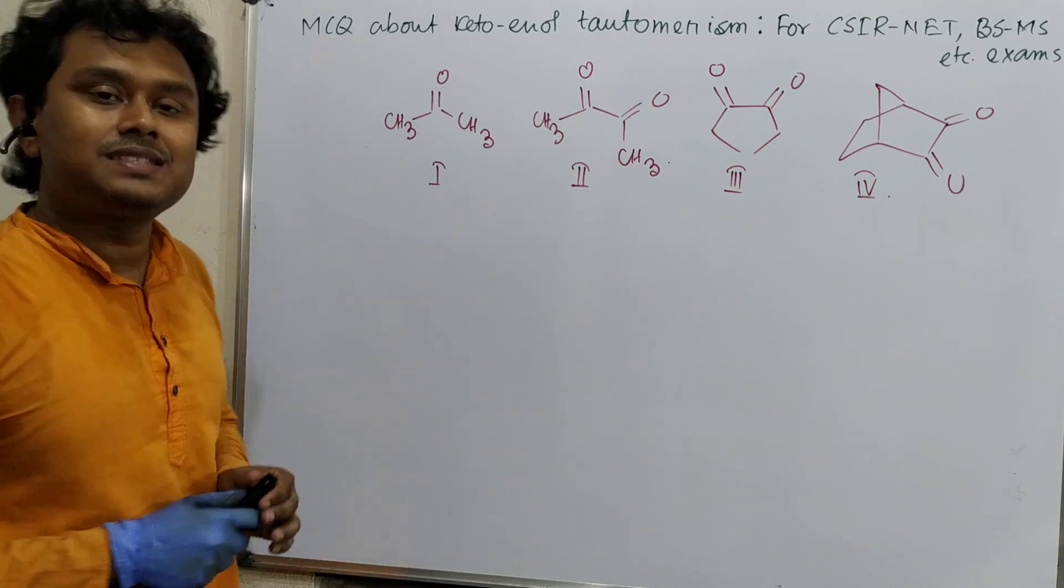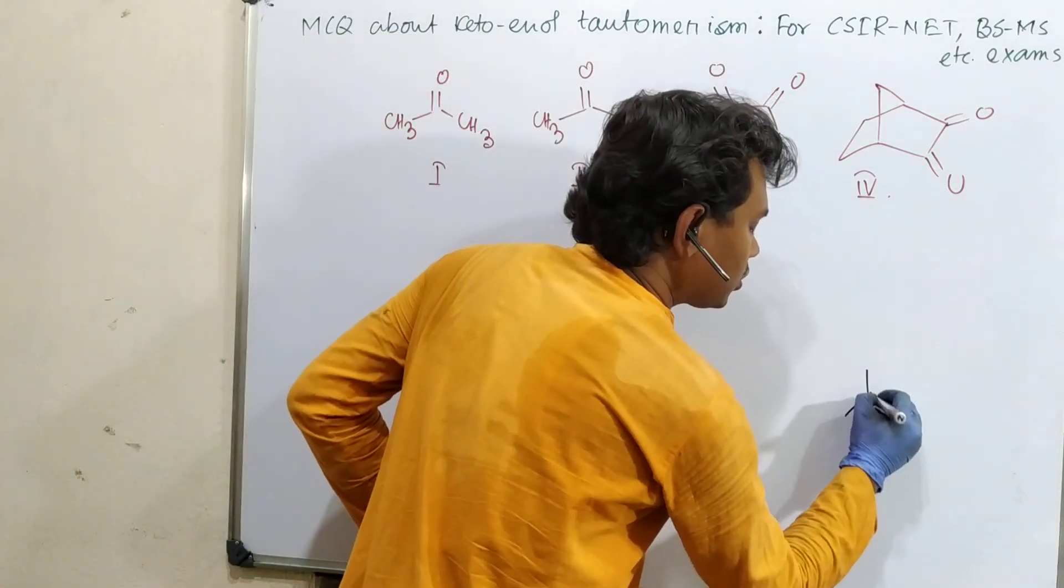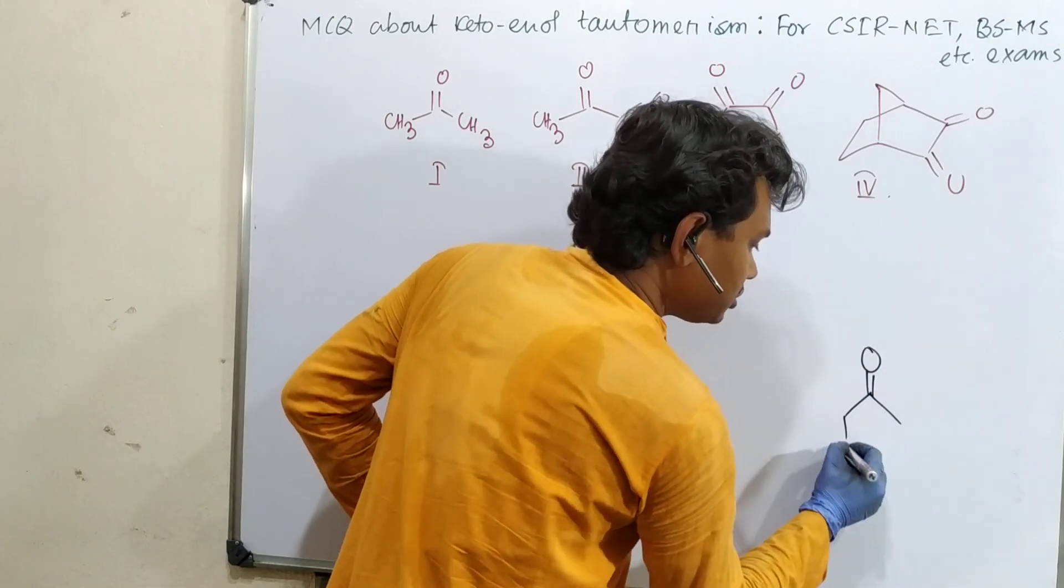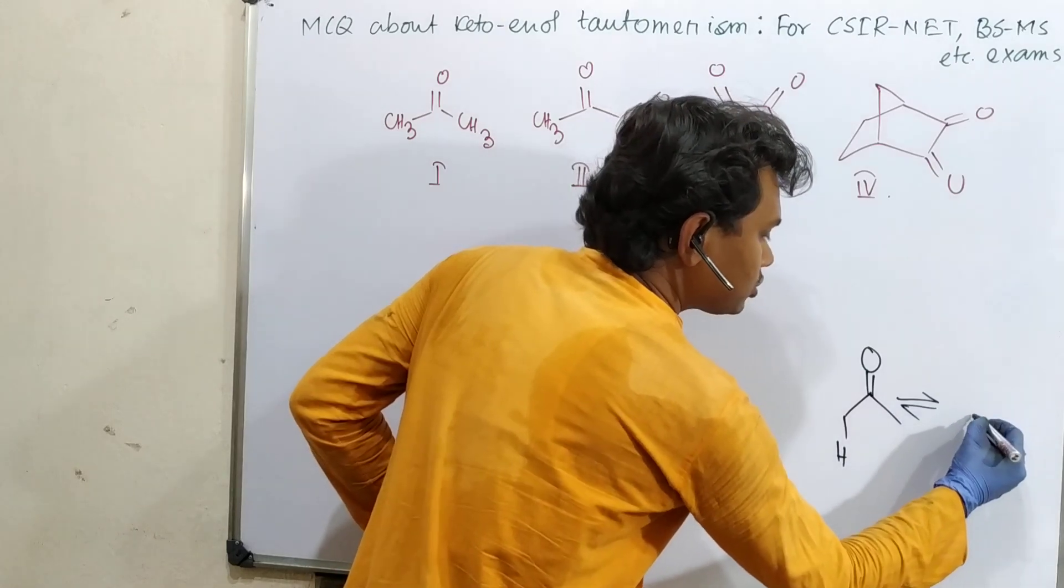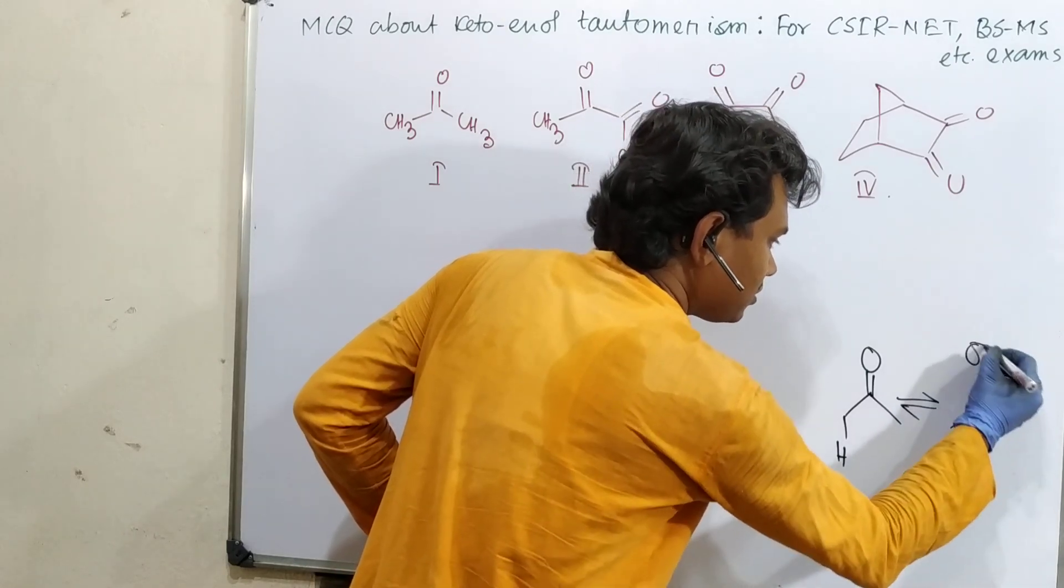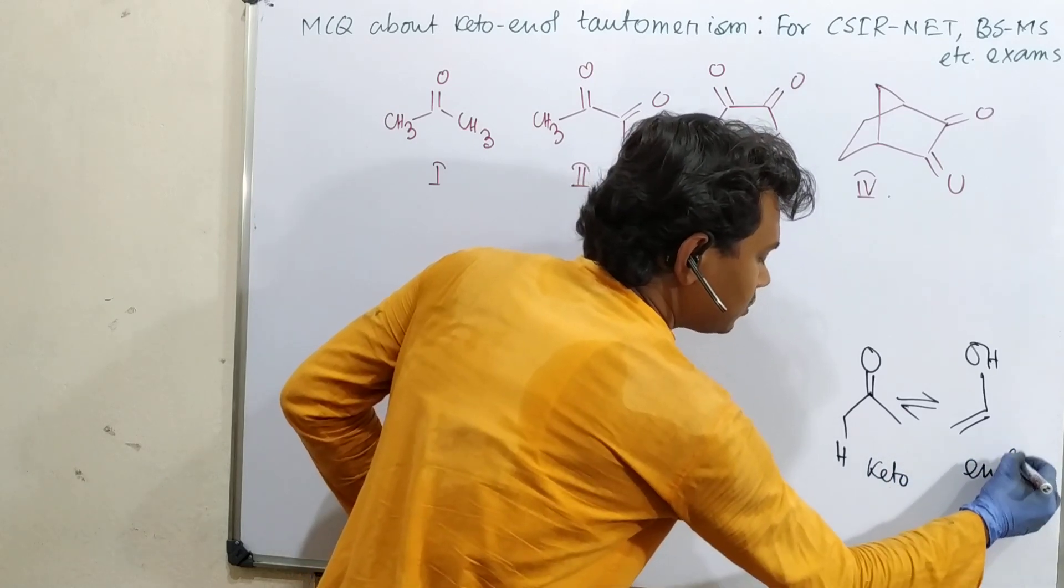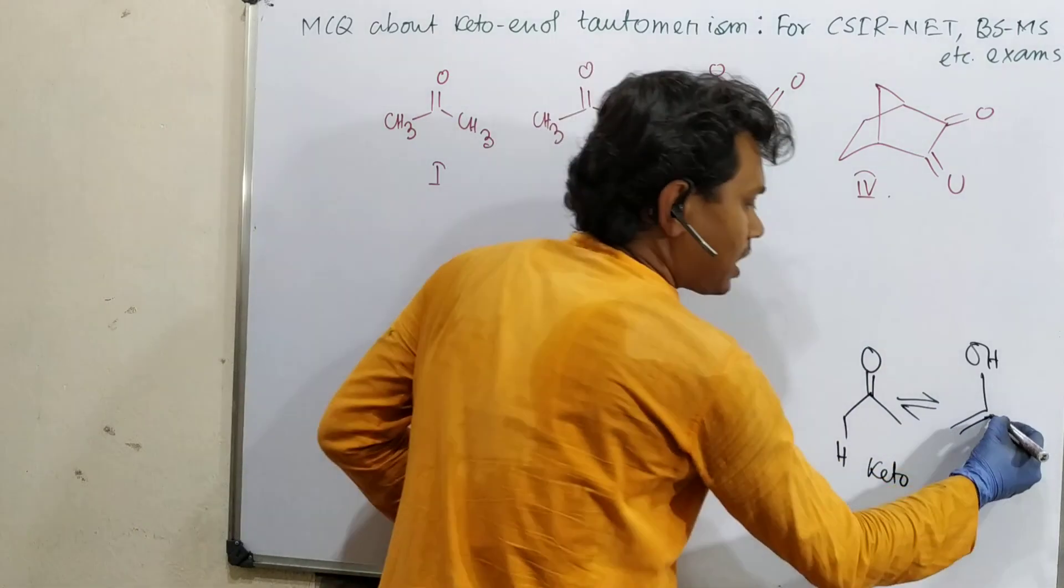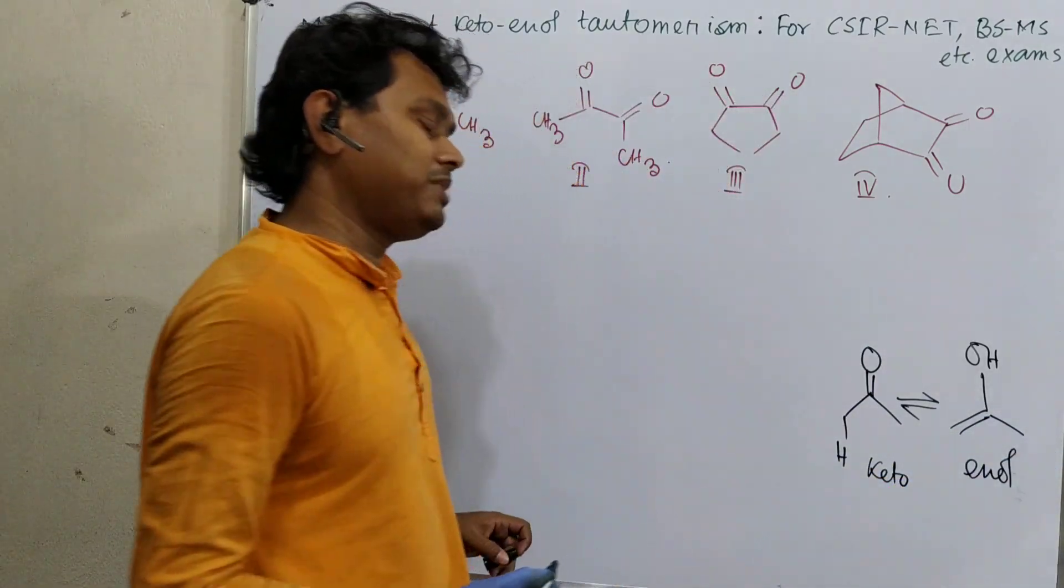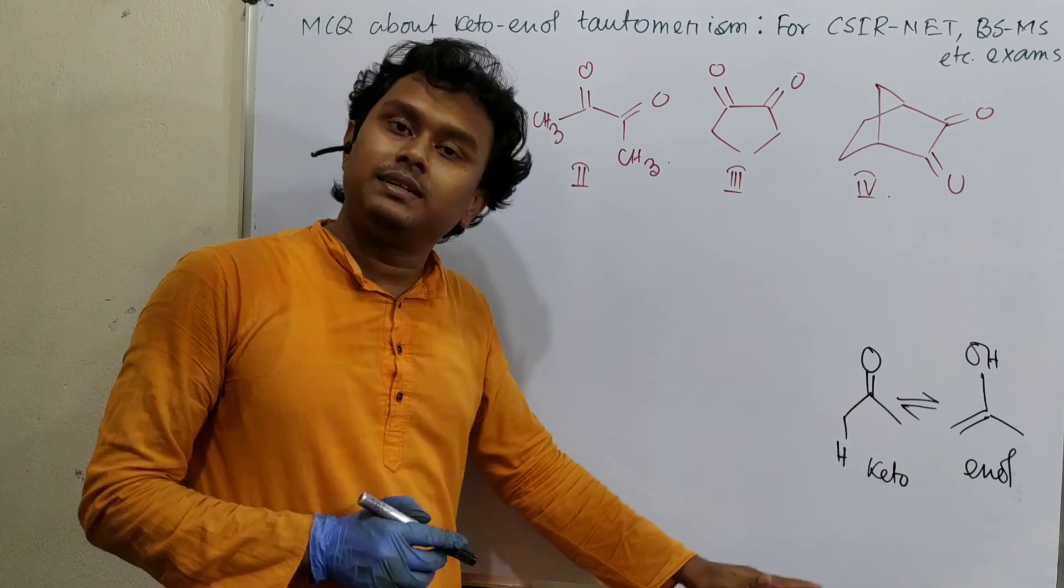Let's start. What is the thing we are dealing with? We are dealing with keto-enol tautomerism. This is the keto and it undergoes tautomerism to form corresponding enol. Enol means 'en' plus 'ol'. By the way, I have uploaded a lecture about basic concept and reaction mechanism.